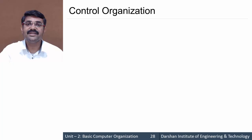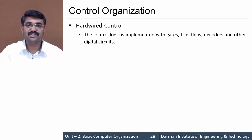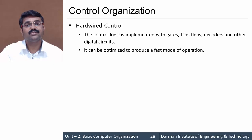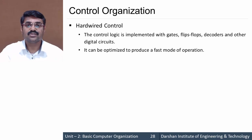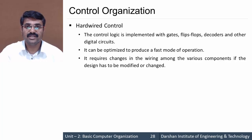This control unit can be designed in two ways. Number one is hardware control, which is basically implemented by means of gates, flip-flops, decoders, and digital circuits. For fast operation it can be optimized easily so we can get faster results. If we want to make any changes to this control unit, we need to change its wiring between the components, so it is somewhat complex to modify.